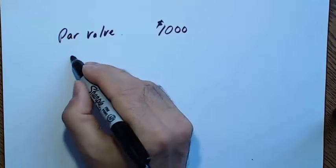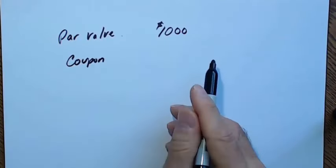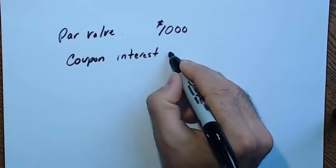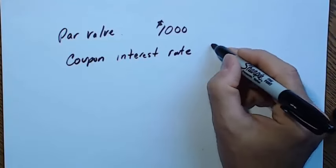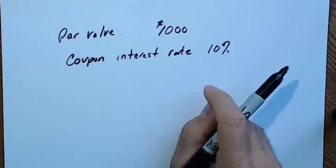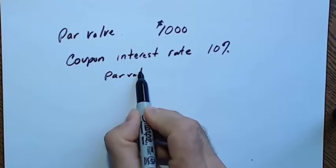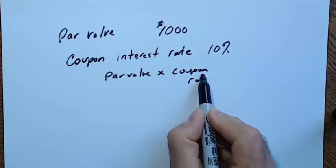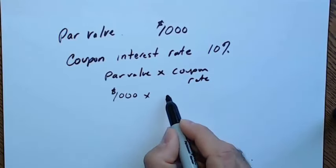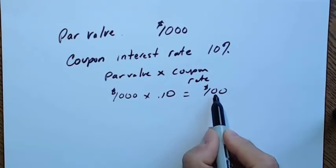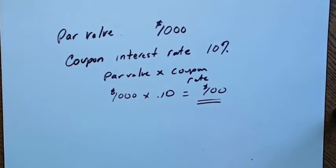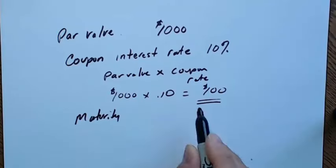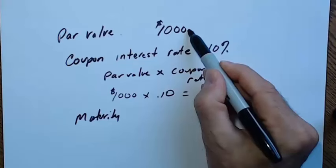A bond generates cash flow called a coupon, which is determined by a coupon interest rate — a stated, usually fixed rate, for example 10%. To figure out the coupon interest each year, you take the par value times the coupon rate. So with a par value of $1,000 and a coupon rate of 10%, the bond will generate $100 per year in coupon interest income to the holder, assuming annual payments. The bond will also have a maturity date — when coupons stop and you get your $1,000 initial investment back.